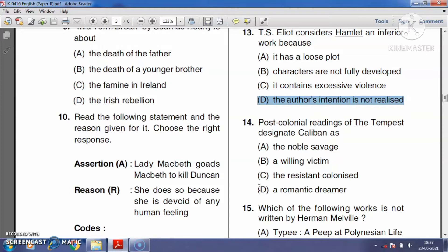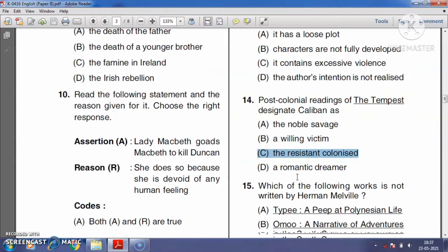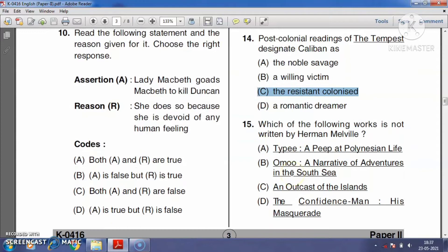Question number fifteen: Which of the following works is not written by Herman Melville? The right answer is option C, An Outcast of the Islands. An Outcast of the Islands is a novel by Joseph Conrad, published in 1896. The novel tells about the fall of Peter Willems, who is a bad man with a bad reputation. So the right answer is option C.